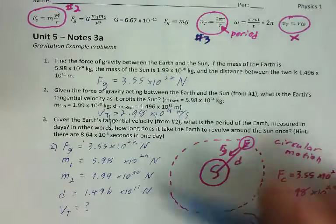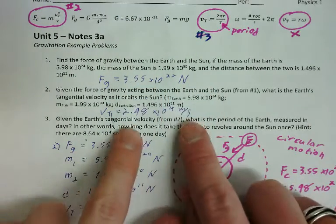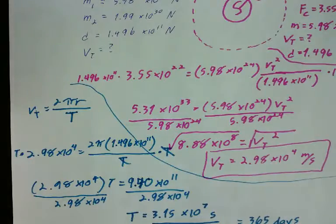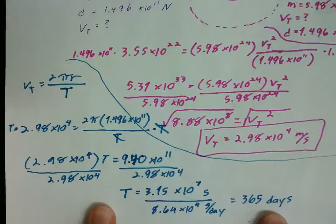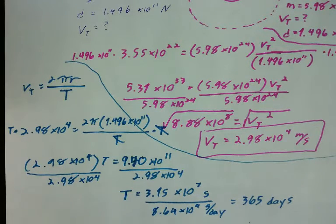So that's how you solve. This is start to finish how one of these problems will work. Find the force of gravity between the objects. Use that to figure out how fast it's orbiting. Use that to figure out how long it's going to take to orbit. That's the whole problem start to finish worked all the way through.